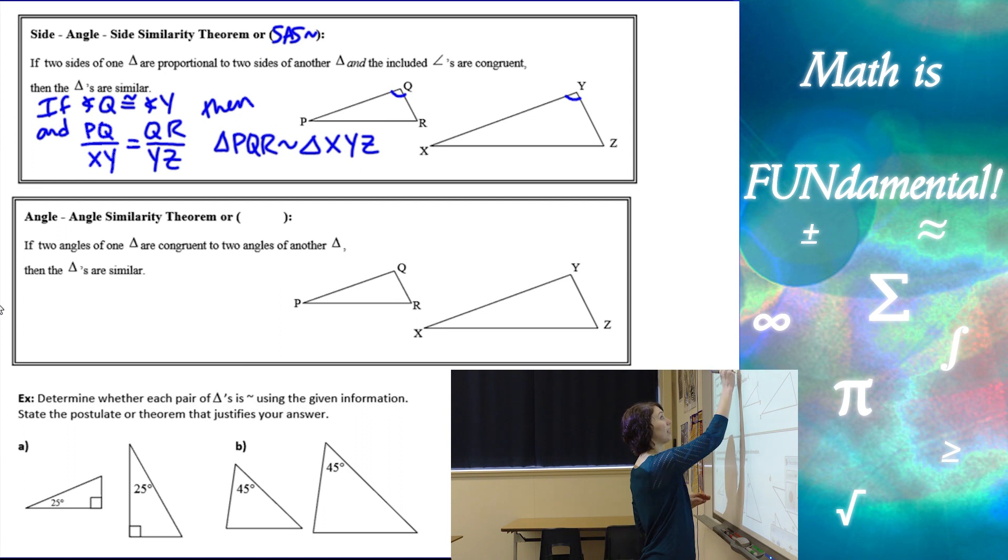And then the last one we have is the angle-angle similarity. Now this one is really nice. It says if two angles of one triangle are congruent to two angles of the other, the triangles are automatically similar. It's really nice. We don't even have to show anything about the sides or the other angle.